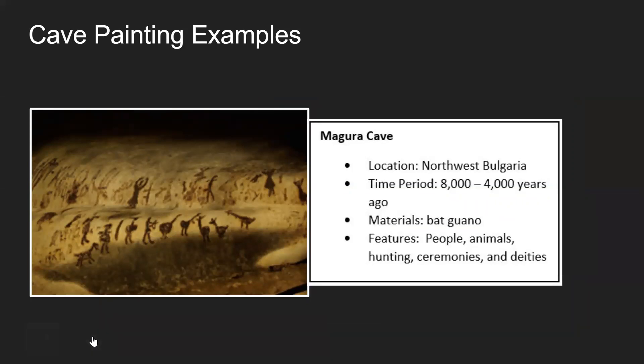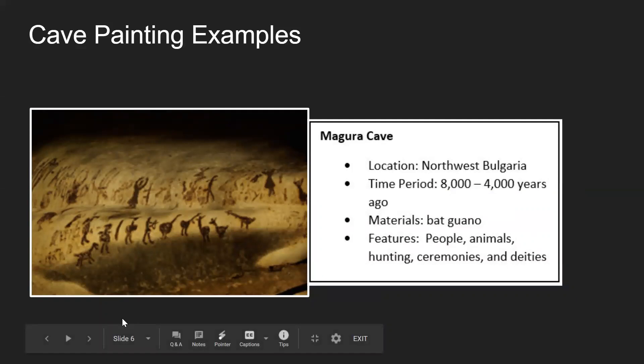Another cave painting example is the Magara cave, located in northwest Bulgaria. The time period is 8,000 to 4,000 years ago. Materials: they used bat guano — that is bat poop. It features people, animals, hunting, ceremonies, and their own deities. In this type, there are a lot of stick figure and silhouette types. The animals are fully colored in most often, and it also heavily features lines and other basic shapes.